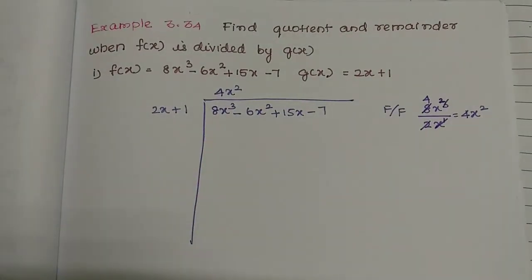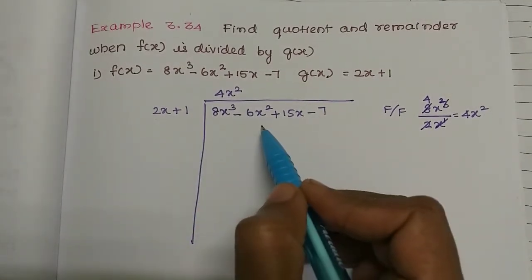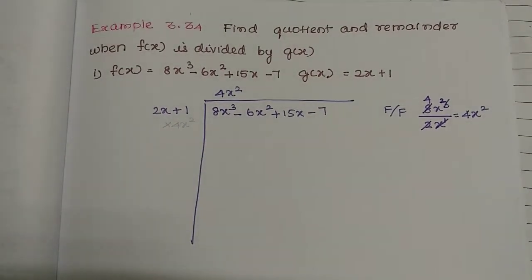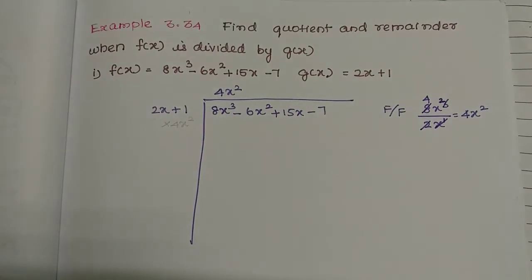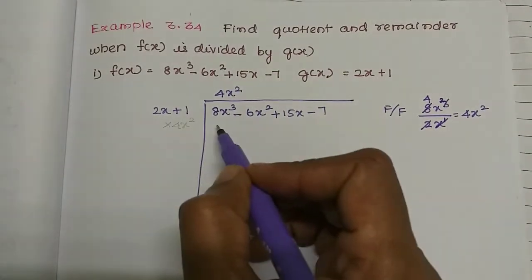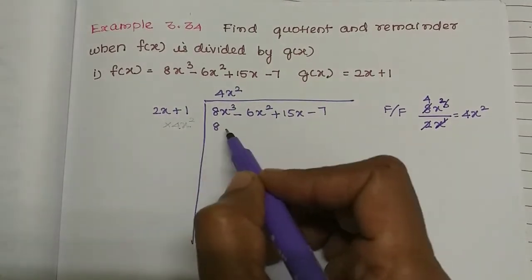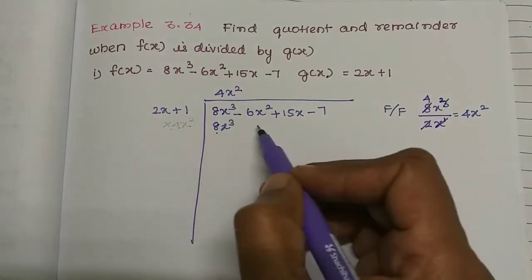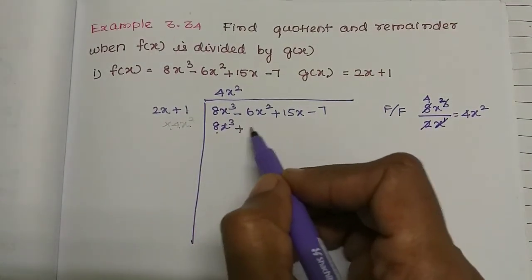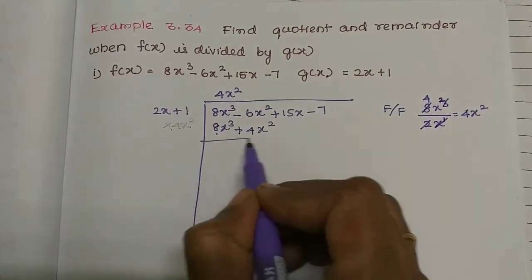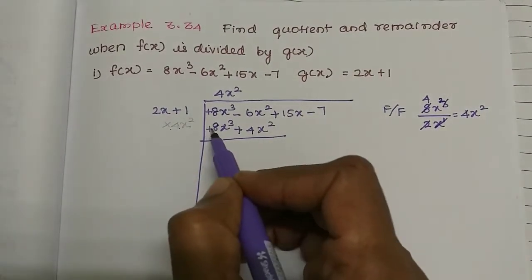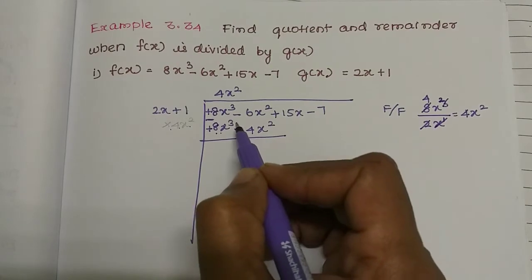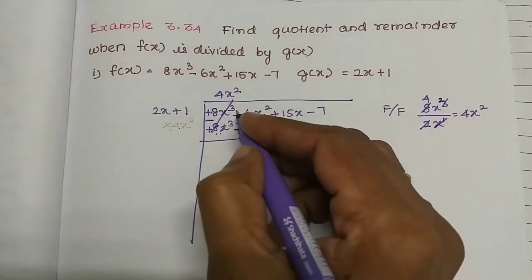Now we multiply. Take the quotient term 4x squared and multiply by the divisor 2x plus 1. So plus 1 into 4x squared is equal to plus 4x squared. Next step: this is plus and this is plus, then we change the symbol to minus. We change the sign and cancel.